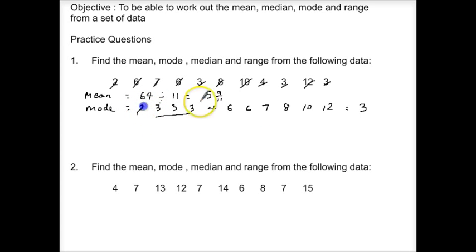So if I cross one out from this end and then from the other end and keep going eventually because there's an odd amount of numbers I'm going to be left with one number in the middle which is 6. So our median here is the number 6.